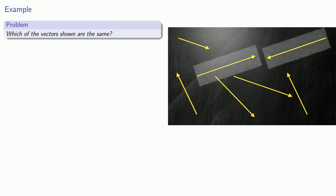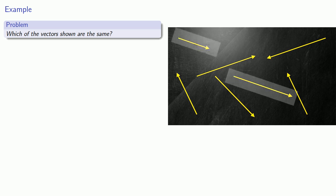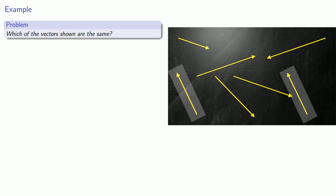For example, here are two vectors with the same length, but their arrows are pointing in opposite directions, so these two vectors are not the same. Meanwhile, here are two vectors pointing in the same direction but with different lengths — so again, these are not the same. But then there are these two vectors: they point in the same direction and their lengths are the same, so these two vectors will be equal.